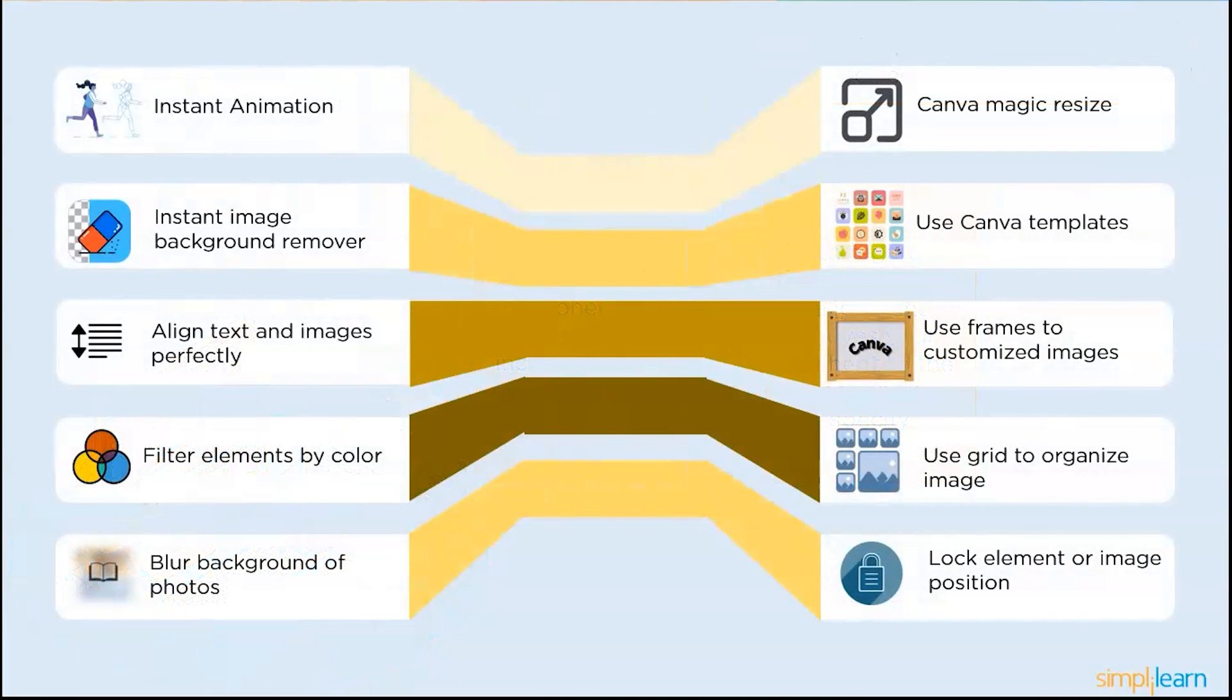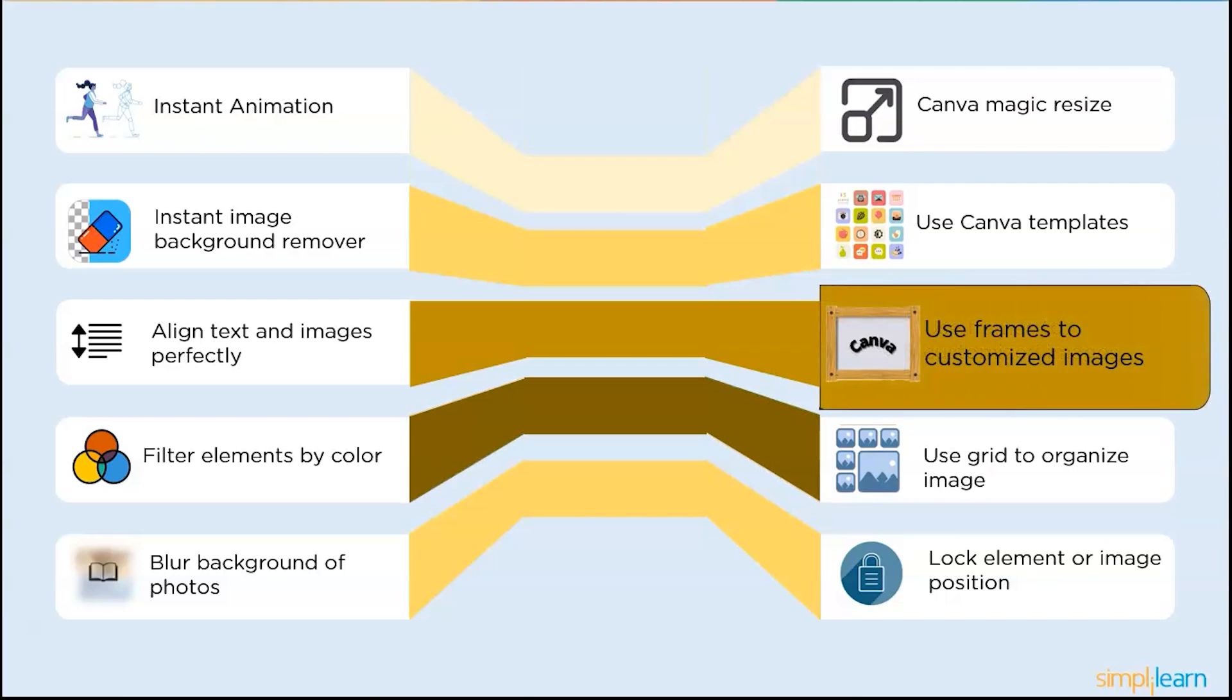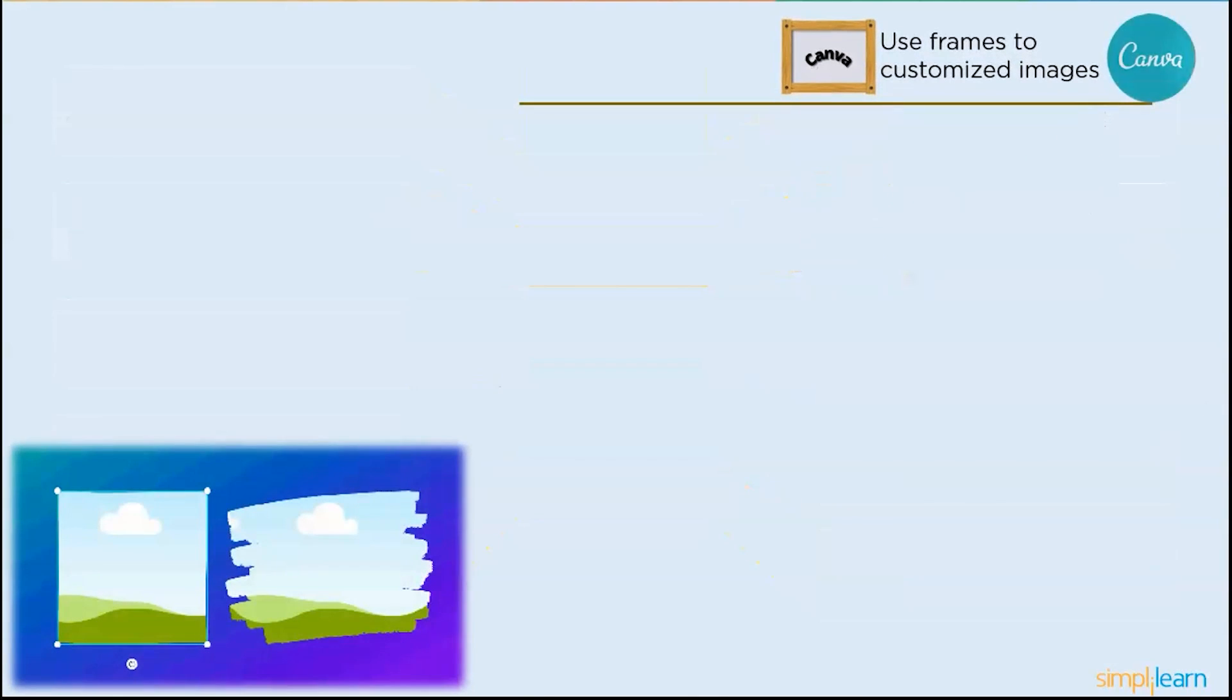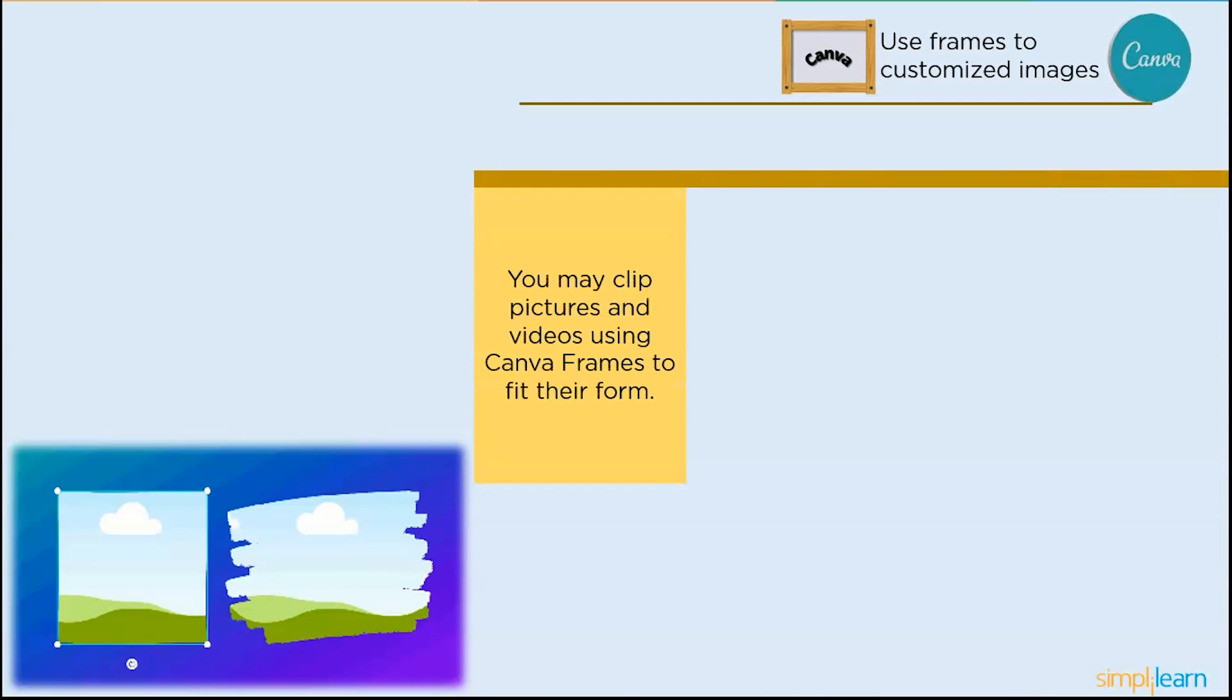And the next one is use frames to customize the images. You may clip pictures and videos using Canva frames to fit their form. You may change the settings and the transparency of inserted photos as well as apply filters or effects. Additionally, you may drag the uploaded files and movies into the frames to add them.